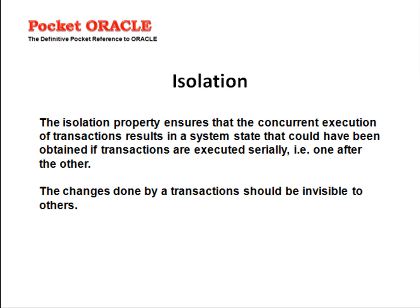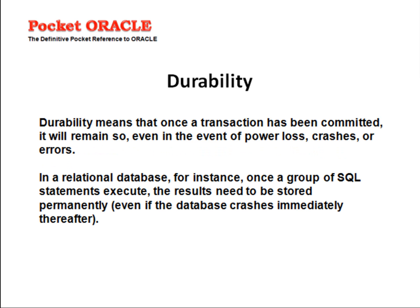The isolation property ensures that the concurrent execution of transactions results in a system state that could have been obtained if transactions were executed serially — that is, one after the other. The changes made by a transaction should be invisible to others. Oracle provides a concurrent environment through a locking mechanism: while a process has a row locked, it cannot be modified by another process. However, via the read consistency mechanism, other processes can see the data as it was before it was modified, until the changes are committed to the database. This is achieved in Oracle through the use of the undo or rollback segment.